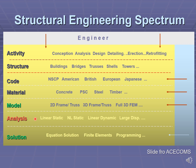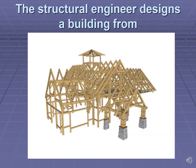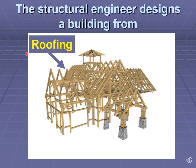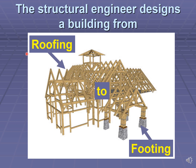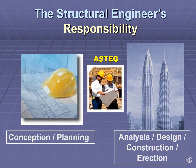A structural engineer analyzes structures using linear static analysis to more complicated non-linear dynamic analysis, and uses simple to complicated solutions. The structural engineer designs a structure or a building from the roofing to the footing. On the other hand, a construction engineer builds the structure from the footing to the roofing.